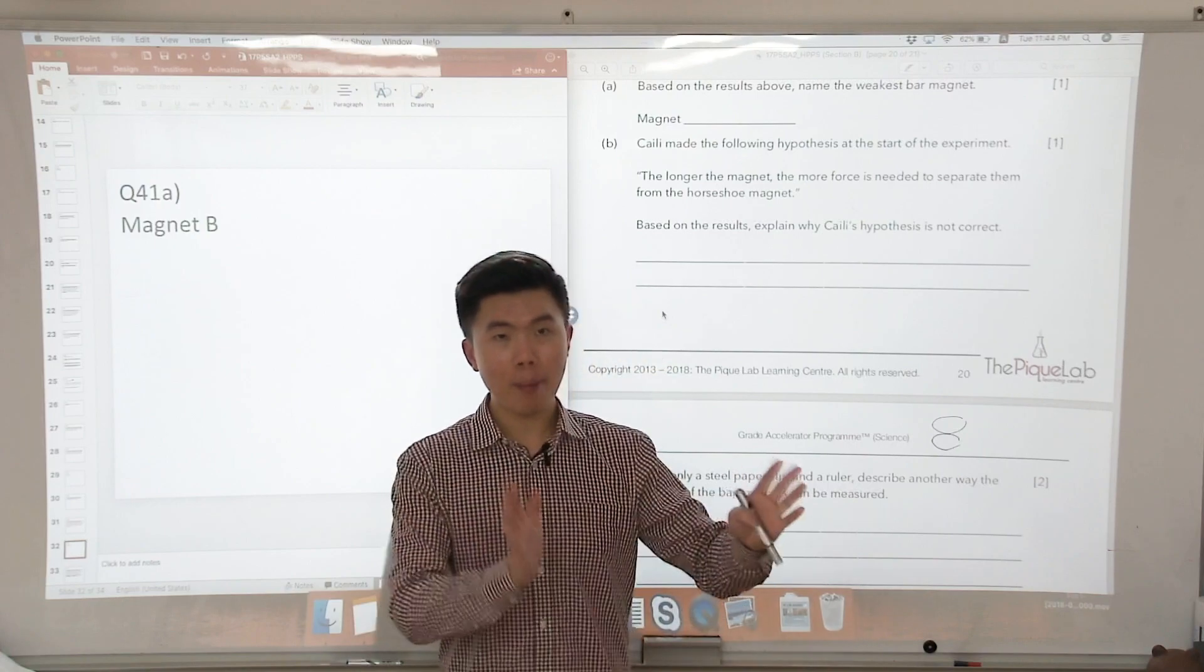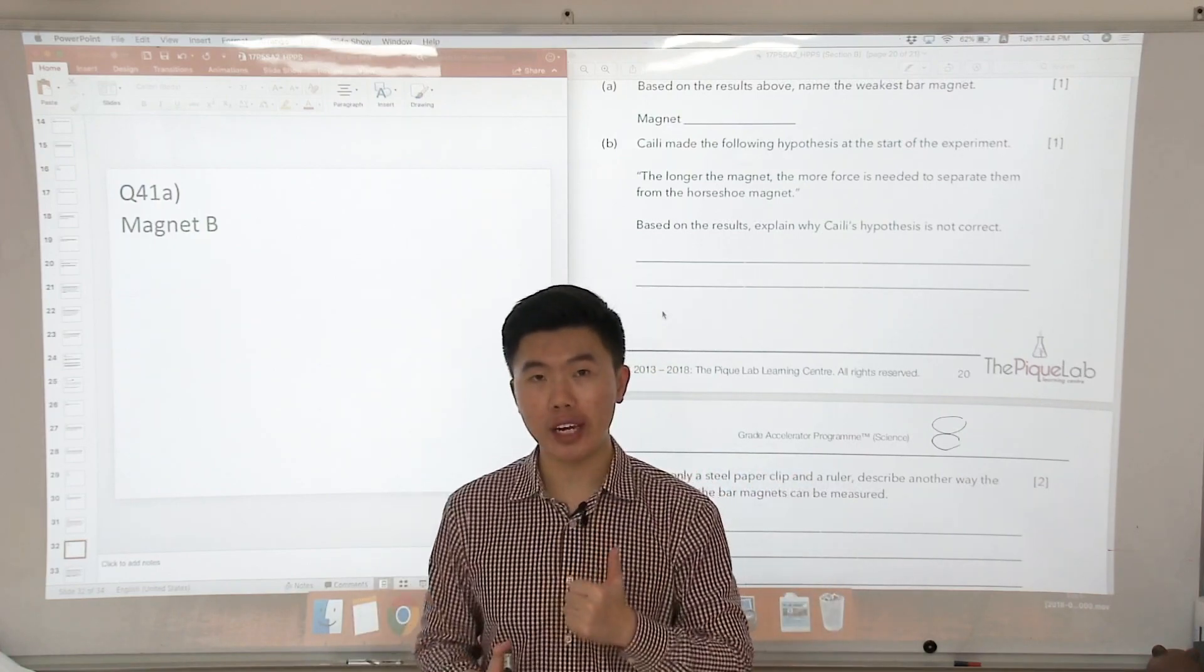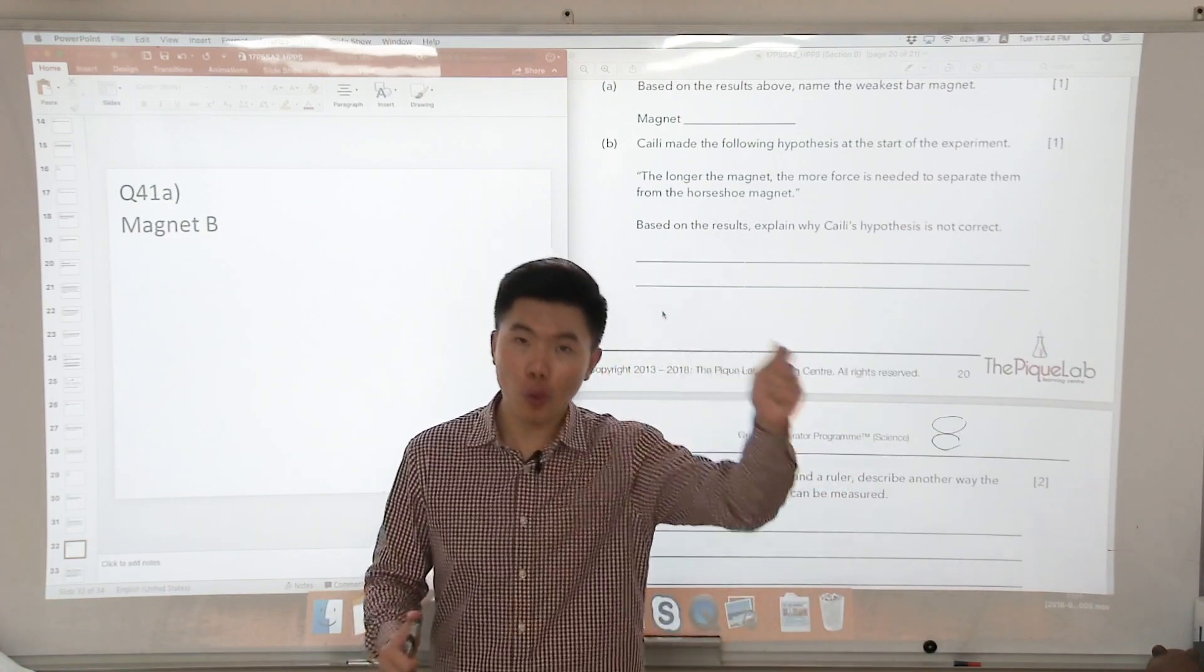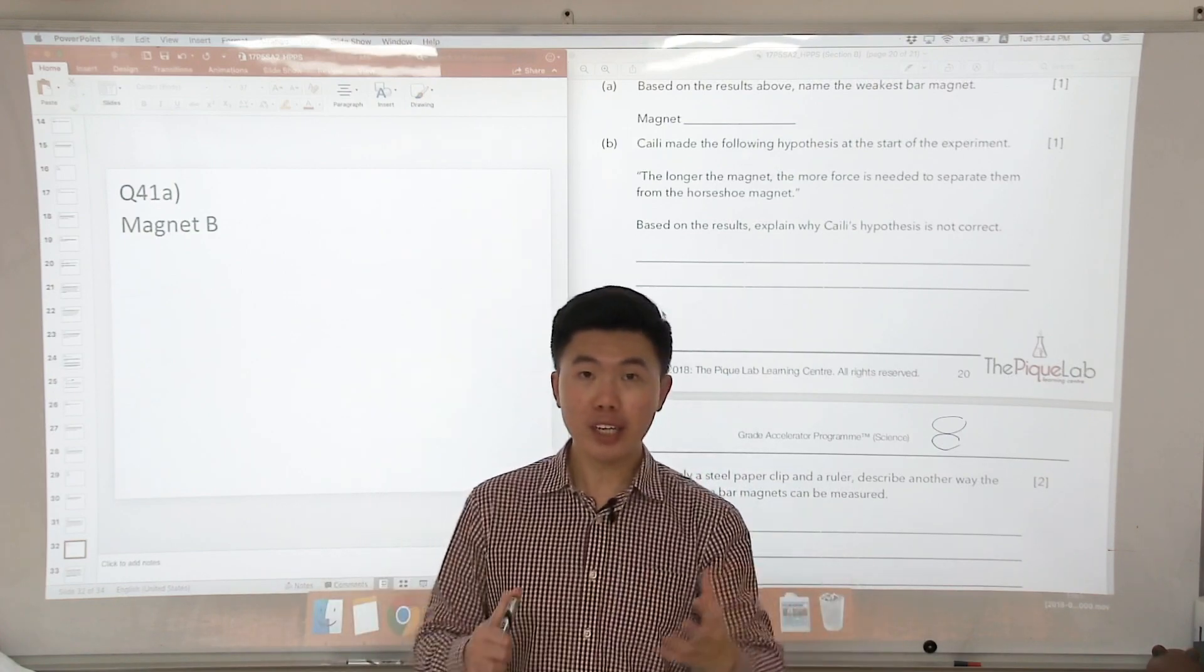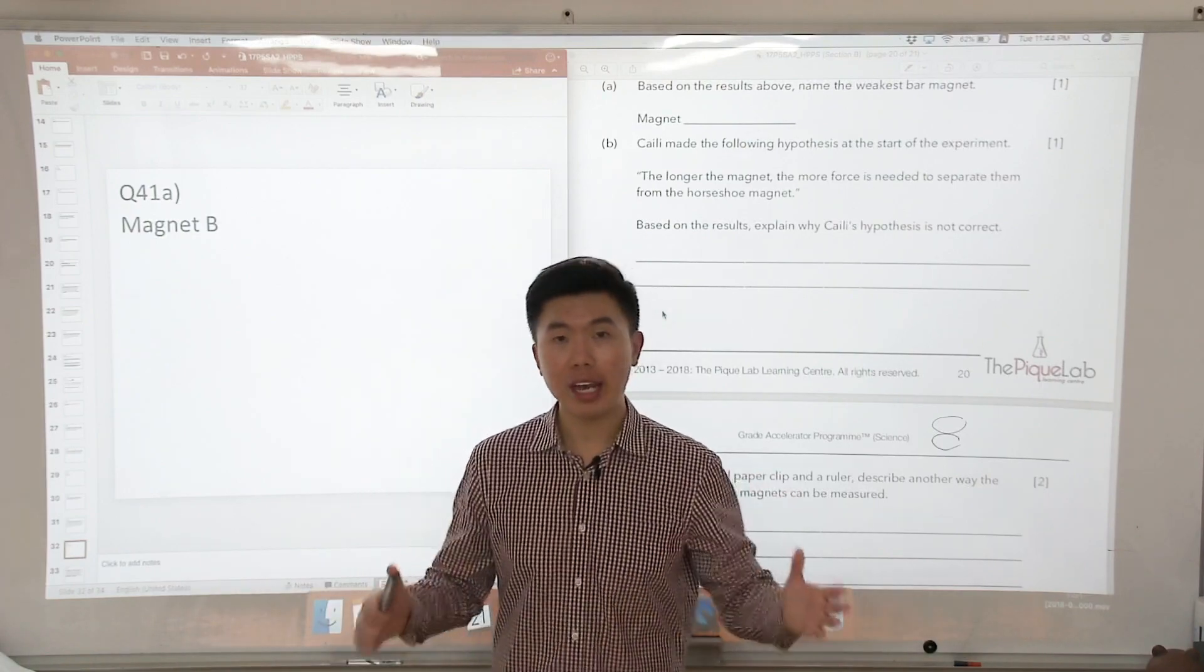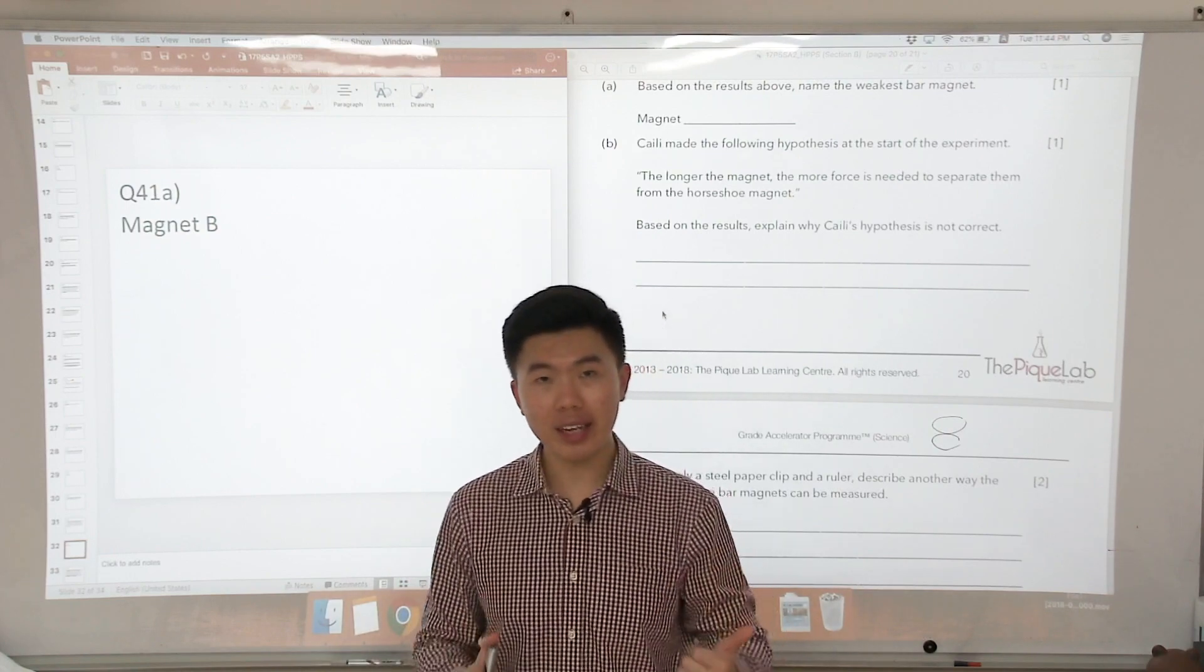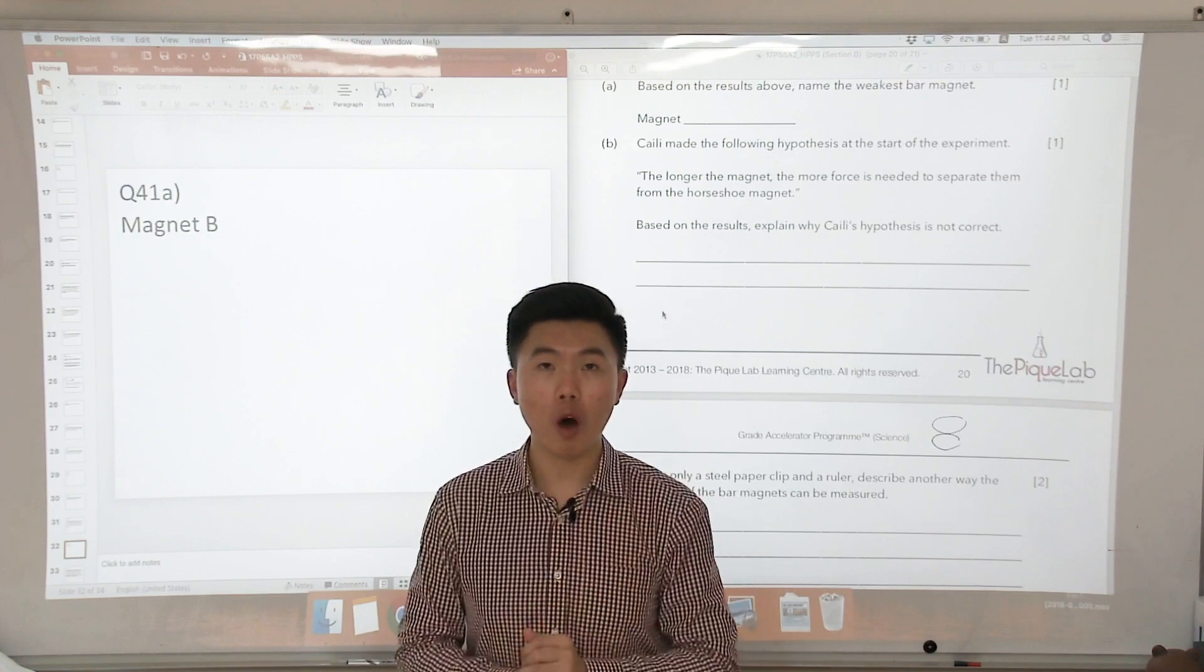We got to refer back to how do we create magnets? Two methods that we learnt. The first one is stroking. So we increase the number of times we stroke the magnet in one direction, the magnetic strength of the bar magnet will be stronger. The other method, electromagnets. How do we increase the strength of the electromagnet? The first one is to increase the number of batteries used in the circuit. The second is to increase the number of coils around the rod.